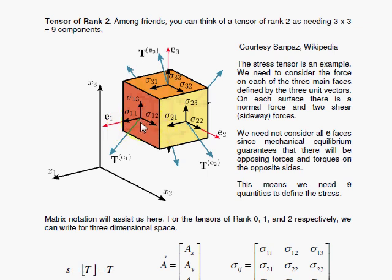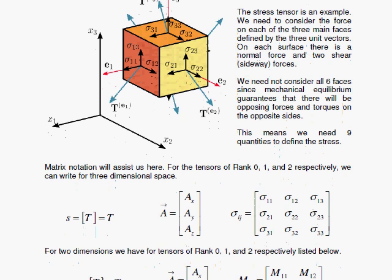And so you can think of this as 1, 1. This is the first surface, and this force is in the 1 direction. This is 1, 2, the first surface defined by the e 1 hat. And it's the second force we're looking at, the y direction. And here is 1, 3. So that means we have 9 components when we do that to the others. We have the 1, 1, the 1, 2, the 1, 3.